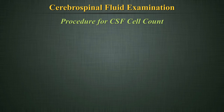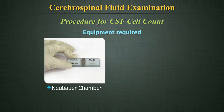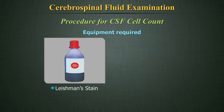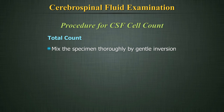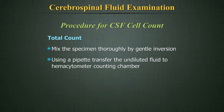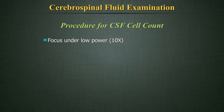Procedure for CSF cell count. Equipment required: Neubaur chamber, microscopic slides, Leishman stain, and centrifuge. Total count: Mix the specimen thoroughly by gentle inversion at least 10 times. Using a pipette, transfer the undiluted fluid to a hemocytometer counting chamber and fill both sides using proper technique. Allow the cells to settle. Focus under low power and adjust the condenser and diaphragm for maximum visualization, then switch to high power or 40x and adjust if necessary.